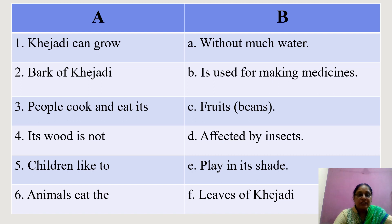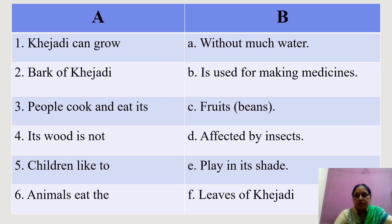The fourth one: its wood is not affected by insects. Number 5: children like to play in its shade. Number 6: animals eat the leaves of Khejadi.